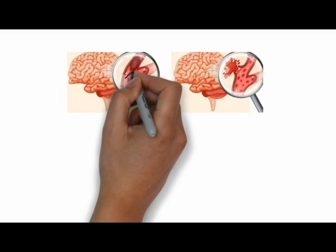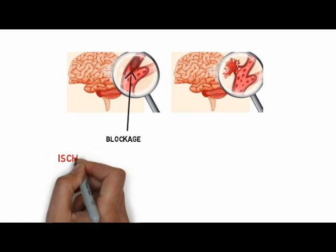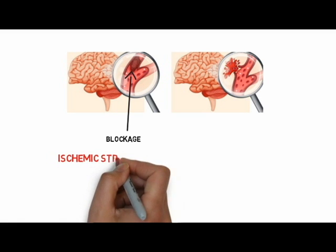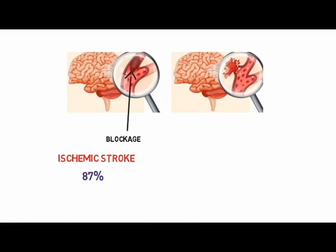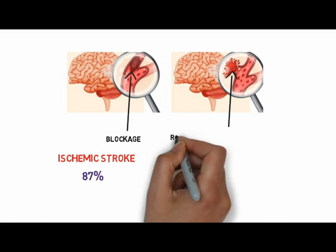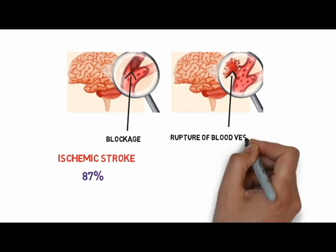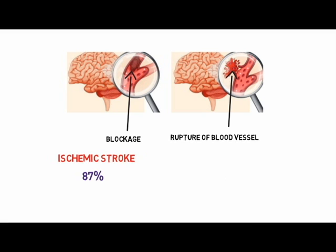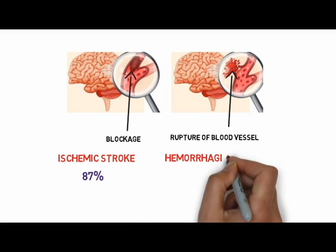The interruption of blood flow can be caused either by a blockage, leading to the more common ischemic stroke, which constitutes approximately 87 percent of all stroke cases, or by a rupture of a blood vessel in the brain, leading to the more deadly hemorrhagic stroke, which accounts for approximately 13 percent of all stroke cases.